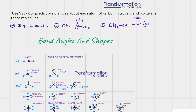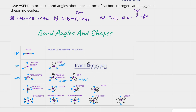Now that lone pairs are filled in, you can check that carbons are happy — for example, this carbon has four bonds, and four times two is eight, giving it an octet. Every carbon will have an octet, so we are ready to predict bond angles. To do that, we use this chart, which tells us what bond angle to expect depending on what the central atom is attached to.